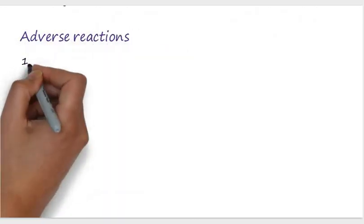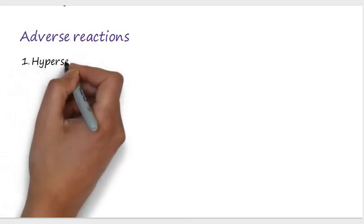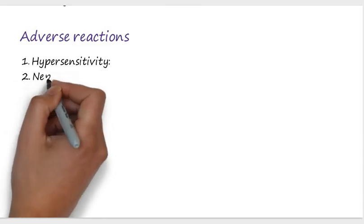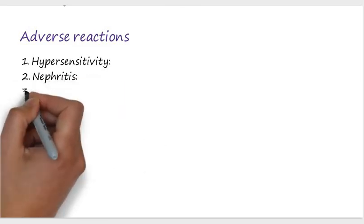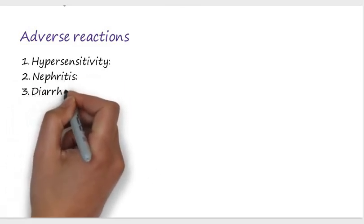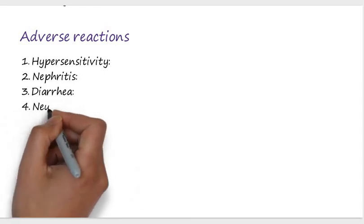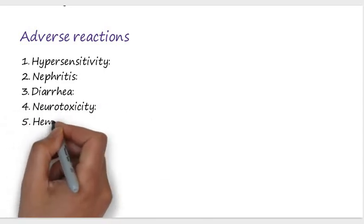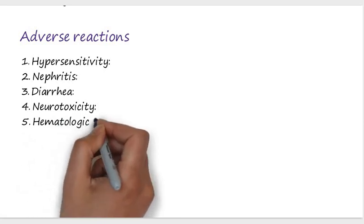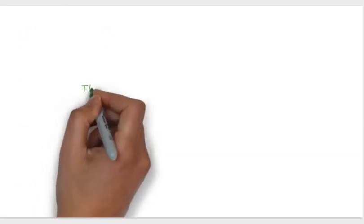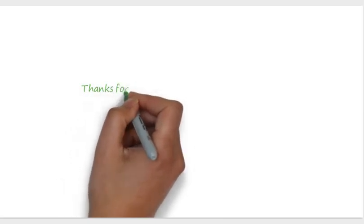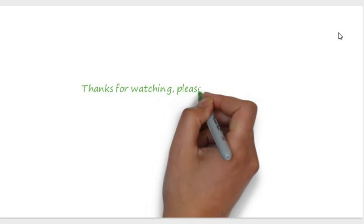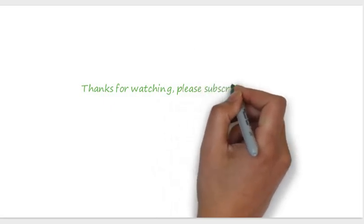Adverse reactions of penicillin include: first, hypersensitivity reactions — the most common; second, nephritis; third, diarrhea; fourth, neurotoxicity; and fifth, hematologic toxicity. Thank you for watching this video. Please subscribe to our YouTube channel, Pharmacology Notes.